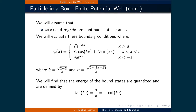To continue solving this problem, we will use boundary conditions that the wave function ψ and the derivative of the wave function must be continuous at the interfaces between regions 1 and 2 and regions 2 and 3. This must be true because the function that defines the particle cannot have any discontinuities. We simplify by defining k = √(2mE) / ħ and α = √(2m(U₀ − E)) / ħ.